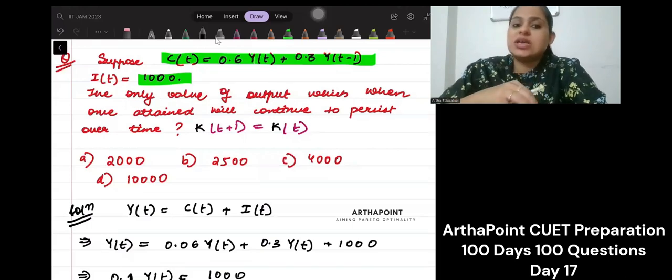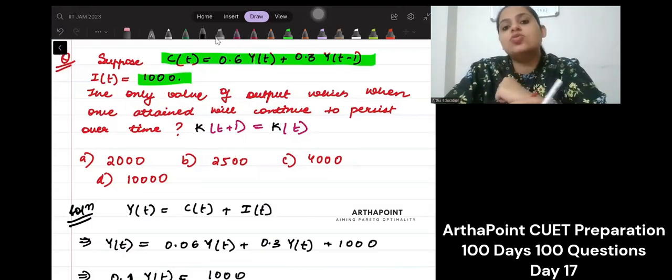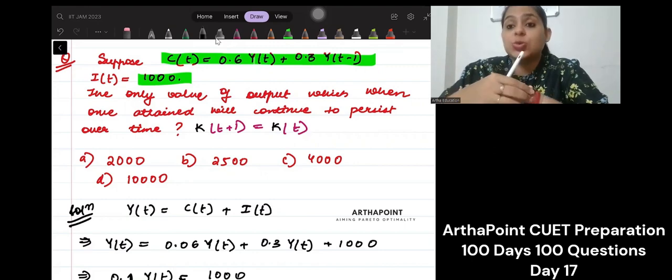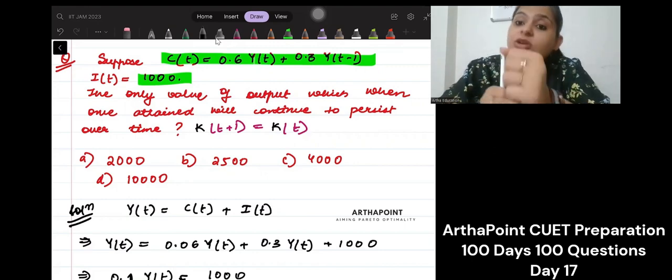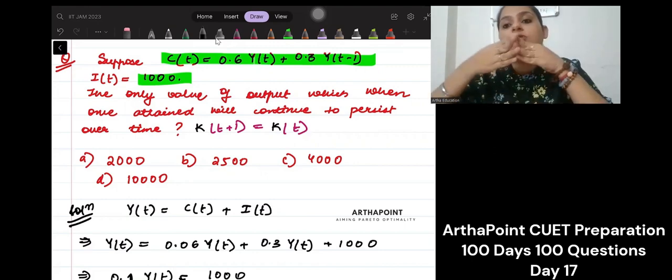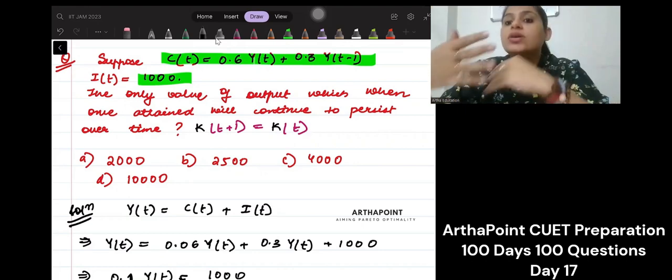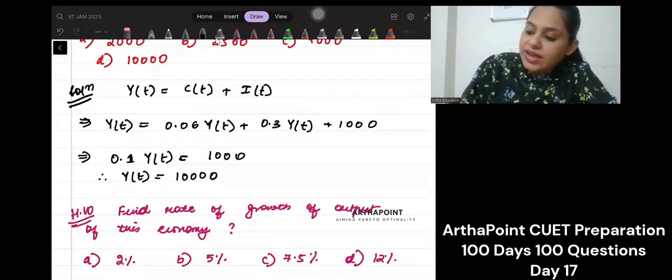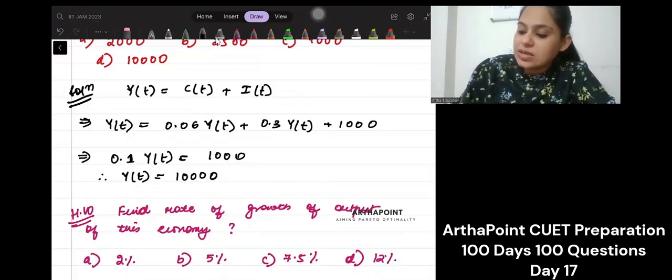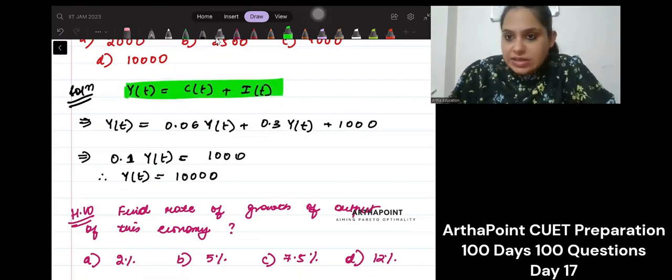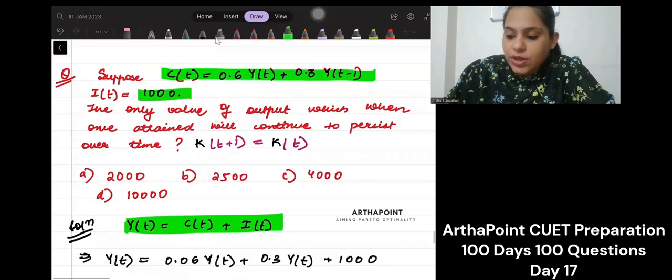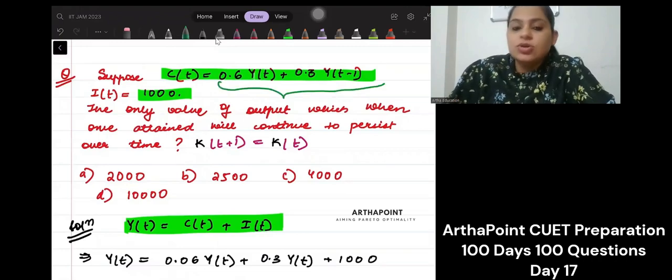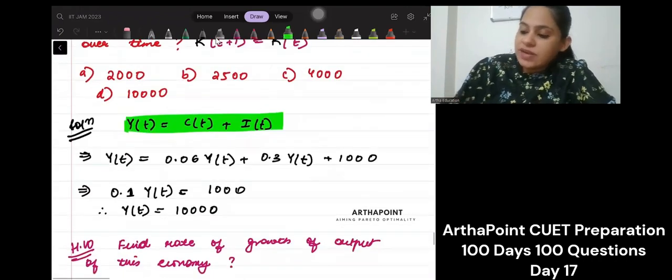Now, exactly the same thing we asked. They are asking very similar questions. What is the level of output which when attained will continue to persist? That means that level of output is constant over time period. So what can you do? So I have Y(t) is equal to C(t) plus I(t). And instead of C(t), I will just plug this equation that I have here. So once I plug in this equation, I will get this.